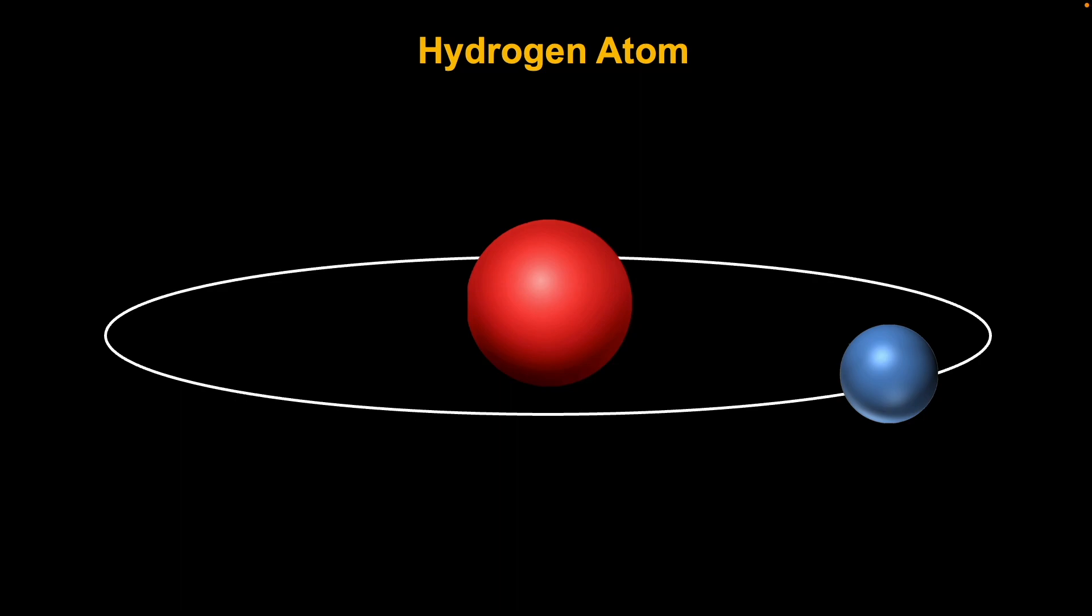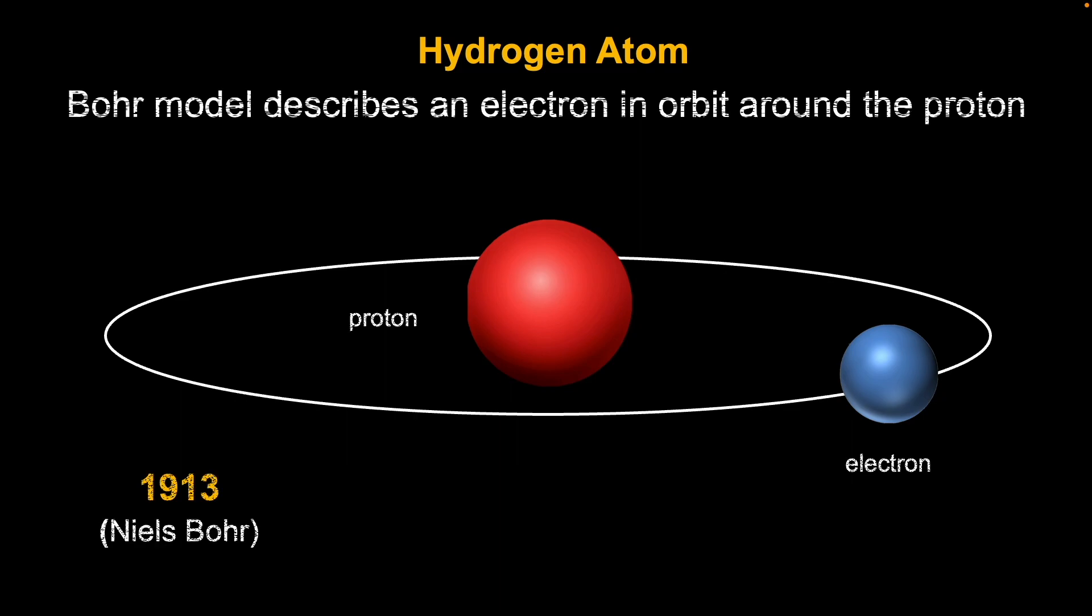What is the simplest atom? It's hydrogen with one proton and one electron. Back in 1913, when Niels Bohr introduced the Bohr model of the atom, it seemed simple as well. An electron that orbits a proton, like how the Earth orbits the Sun.